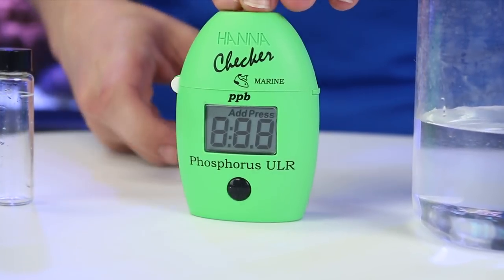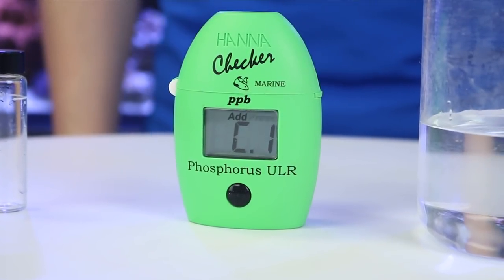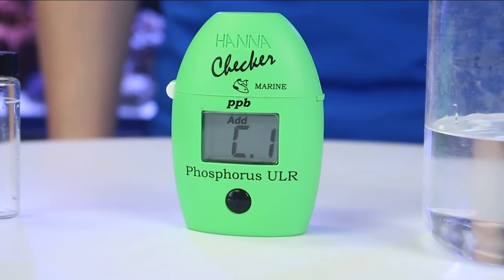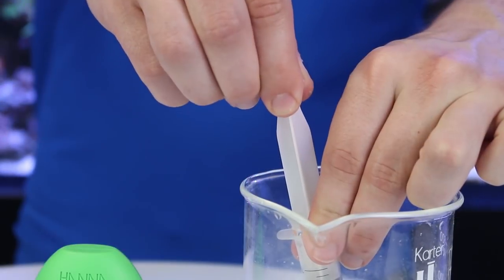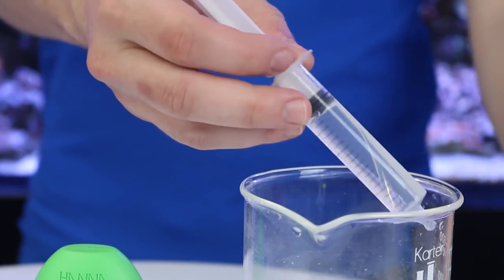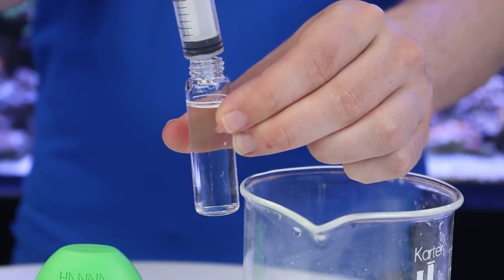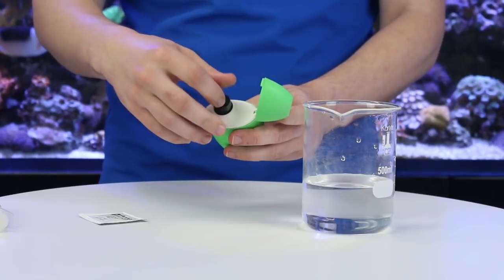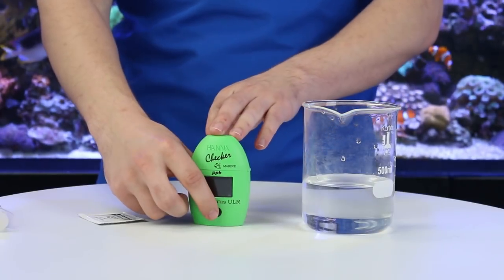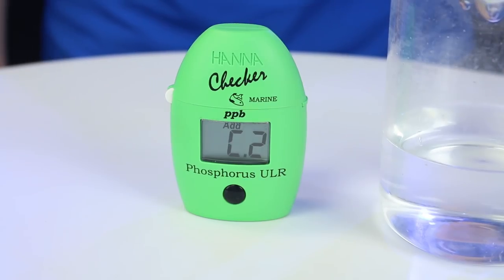Using the Hanna Phosphate Checker is pretty simple. The first step is to turn the checker on by pressing the center button. Once the screen is flashing add C1, you are ready to get testing. Fill the cuvette with 10 milliliters of water from your tank and place it in the checker and close it. Press the button and wait until the screen reads add C2.